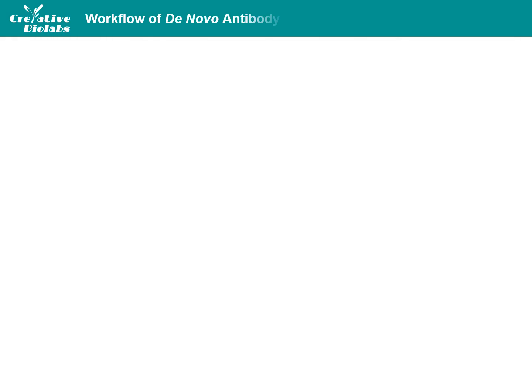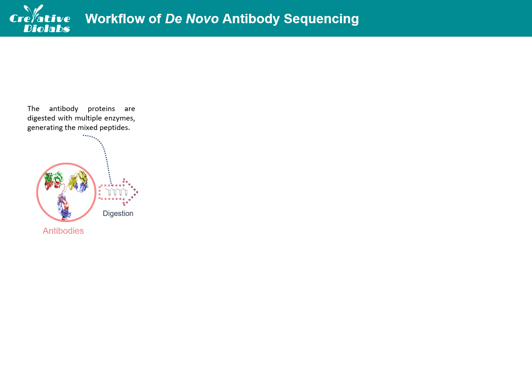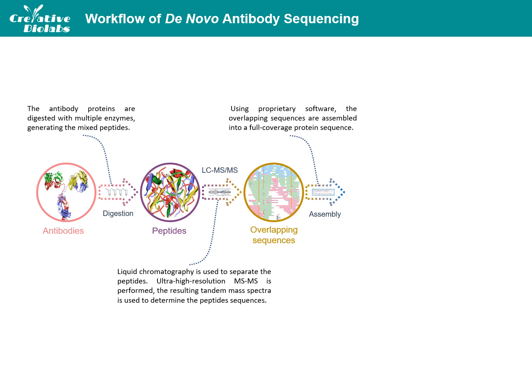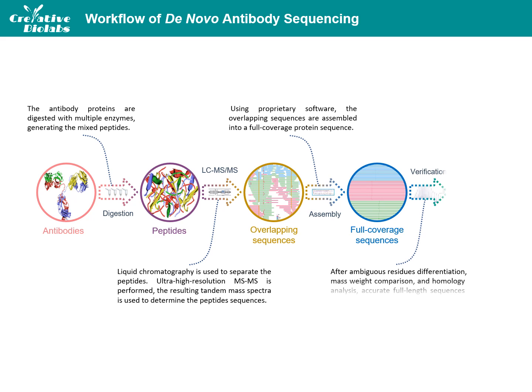A typical workflow of DeNovo Antibody Sequencing mainly consists of four processes. First, the antibody proteins are digested using an optimized set of orthogonal enzymes with diverse cleavage sites, generating mixed peptides. Then chromatographic technologies are used to separate peptides. Ultra-high-resolution mass spectrometry tandem to the chromatography is performed to determine the peptide sequences de novo from tandem mass spectra. Using proprietary software, the overlapping sequences are assembled into a full coverage protein sequence.